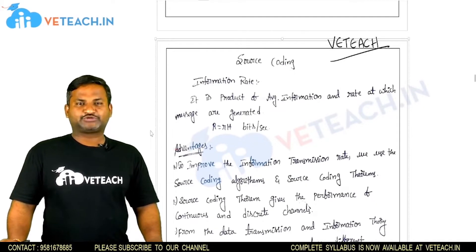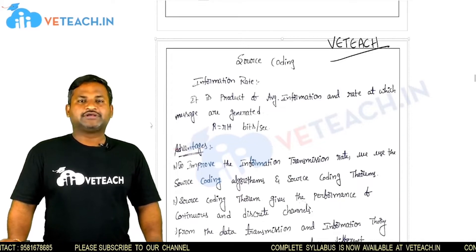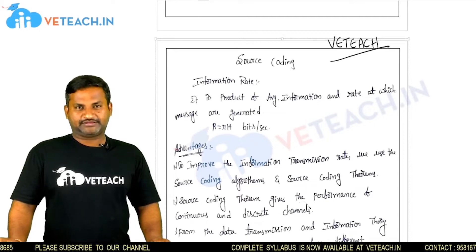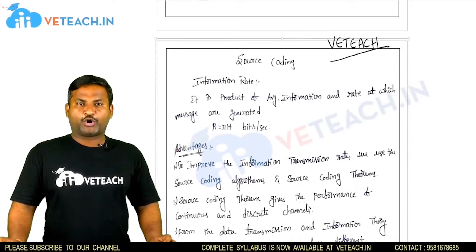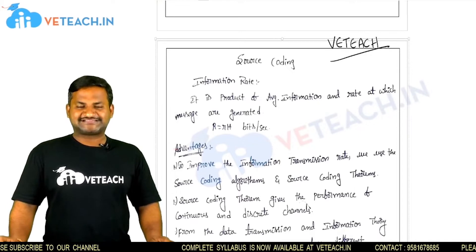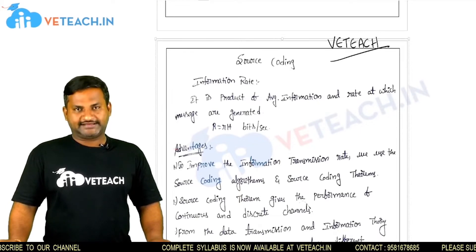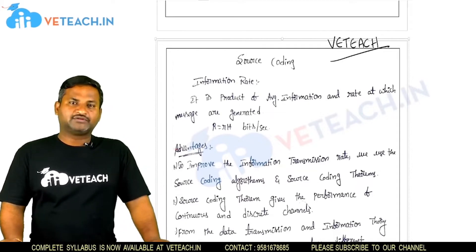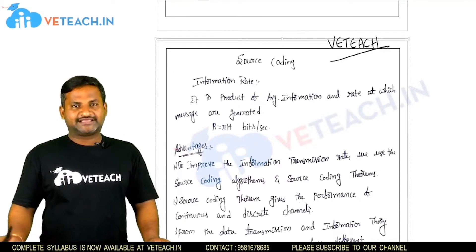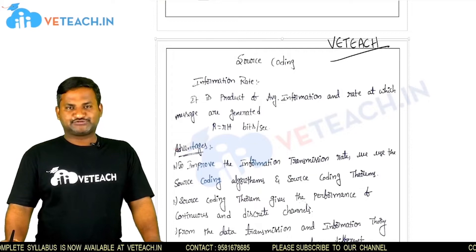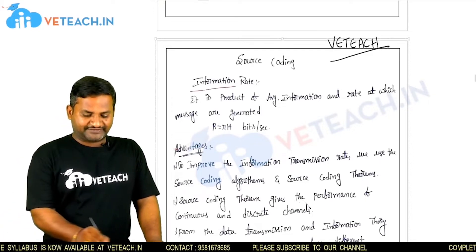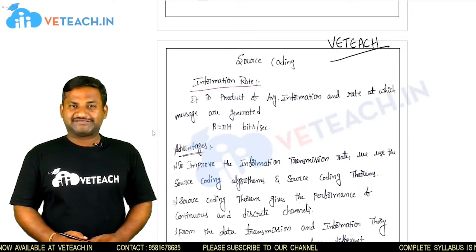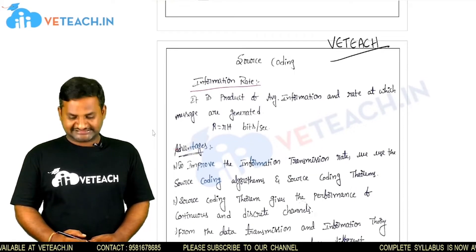So what is source coding, and what are the topics in source coding? Some of the topics in source coding are related to entropy. Entropy is nothing but average information — how many messages are transmitted with respect to a time period. In source coding, what are the different types of coding techniques available, and how does the coding process take place? The basic concept in source coding is information rate.